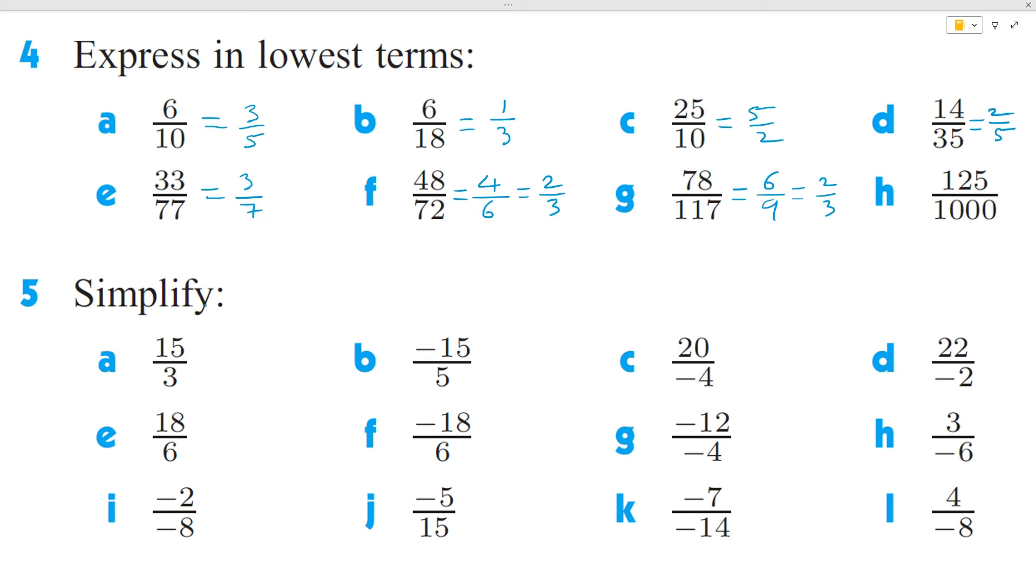For question H, 125 over 1000, maybe I'll do it right here because there's no space at the edge. So 125 goes into 1000. It's actually 8 blocks of 125, which will give you 1000. So this is simply going to be 1 over 8. So 8 times 125 is 1000.